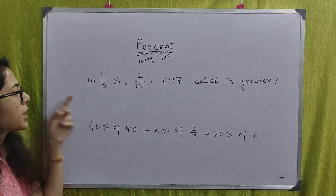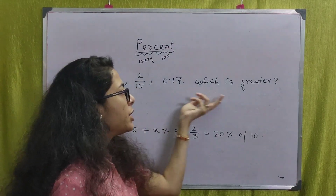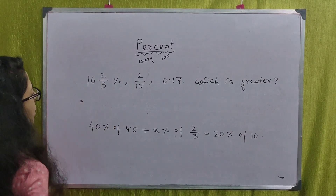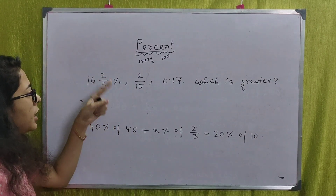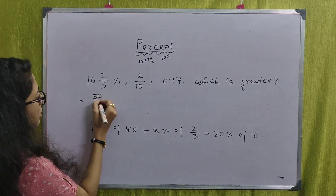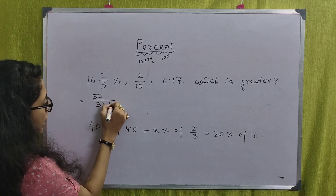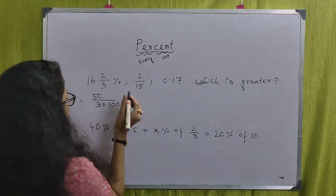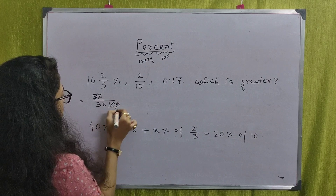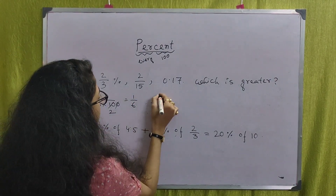Next question: 16 and 2 by 3 percent, 2 by 15, and 0.17 — which is greater? What do we do in the first step? 16 and 2 by 3 percent equals 50 by 3 percent. So we divide it by 100, giving us 1 by 6.